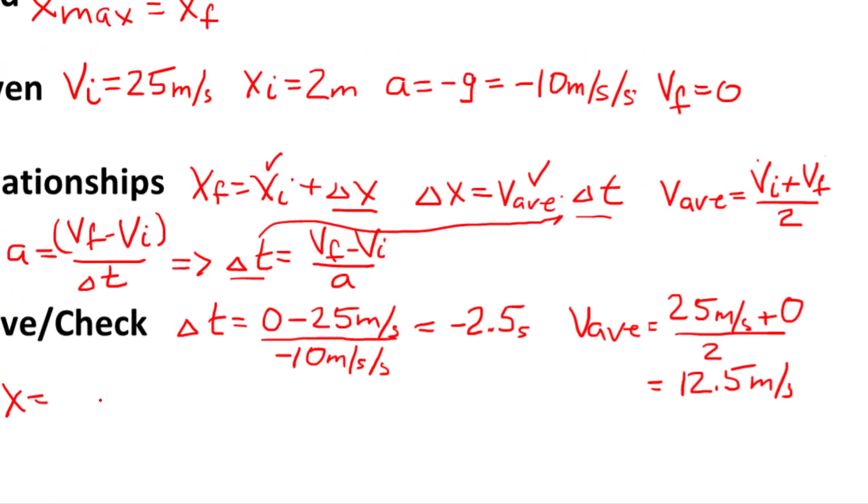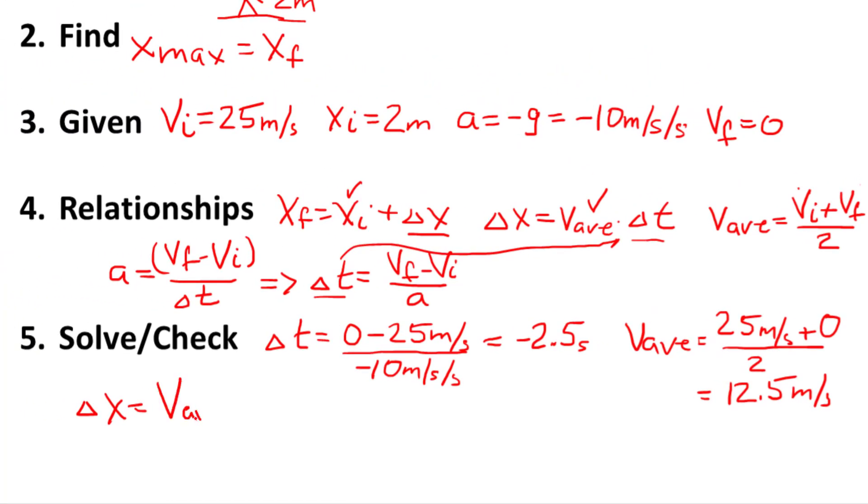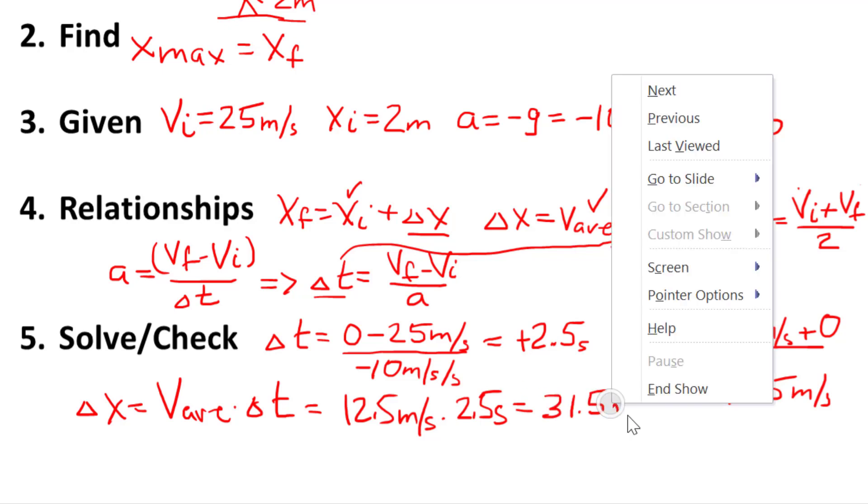Let's go and it looks like we have enough information to find our delta x. Delta x is equal to our average velocity times my change in time. That is, average velocity is 12.5 meters per second. Our time is, oh, I see my error here. This, of course, should be positive 2.5 seconds. So we have a negative divided by a negative, that would be a positive, times my 2.5 seconds. And I multiply those, I get 31.5 meters.